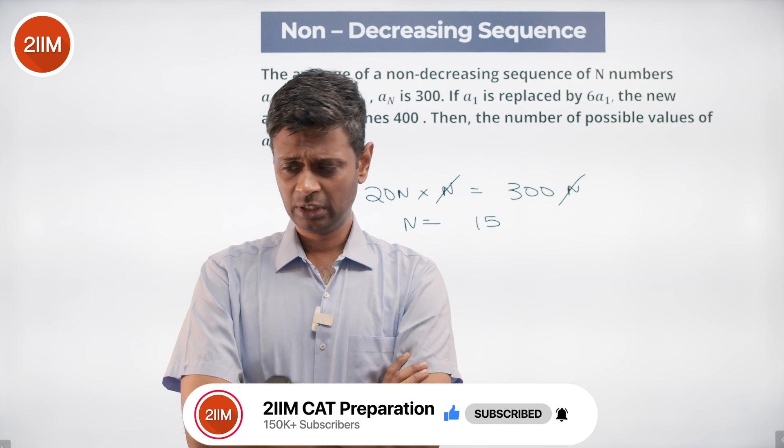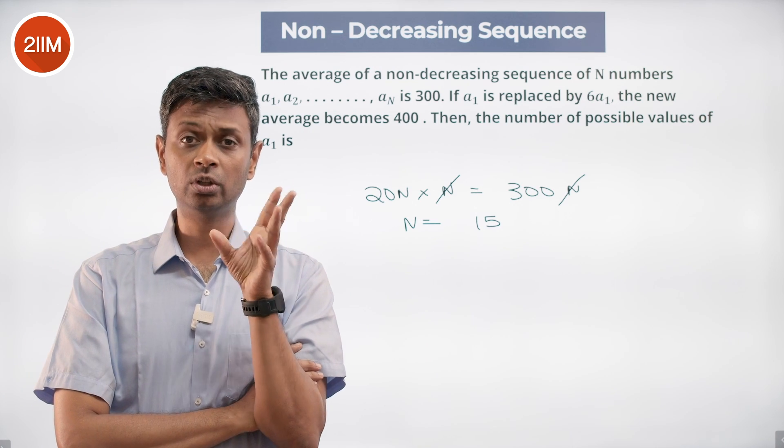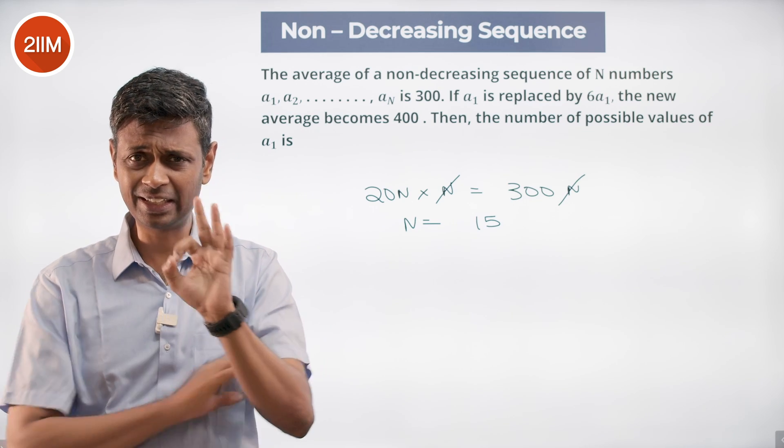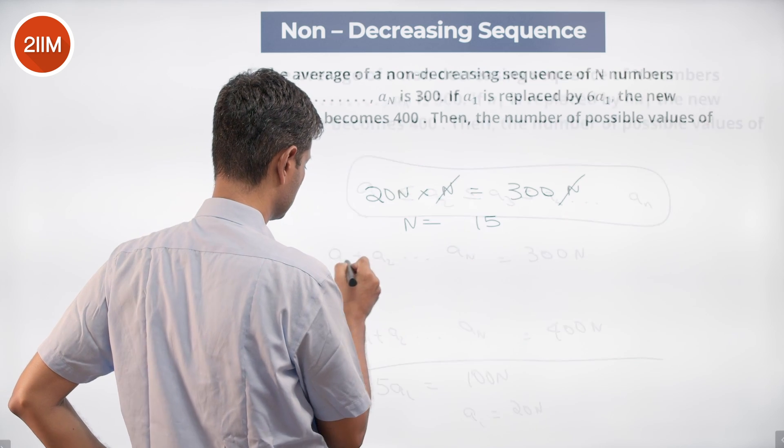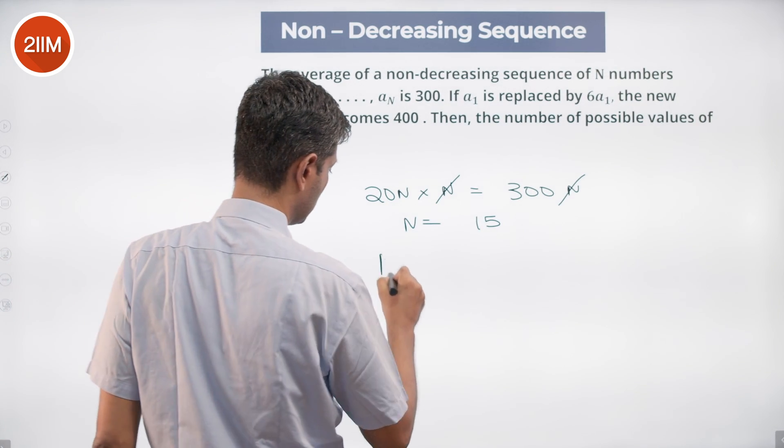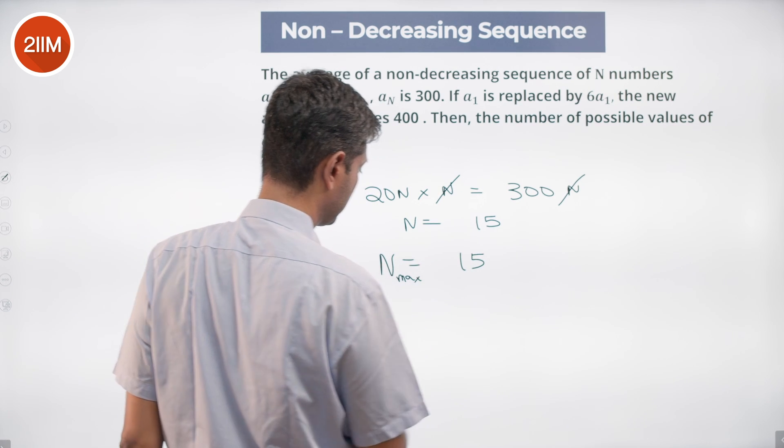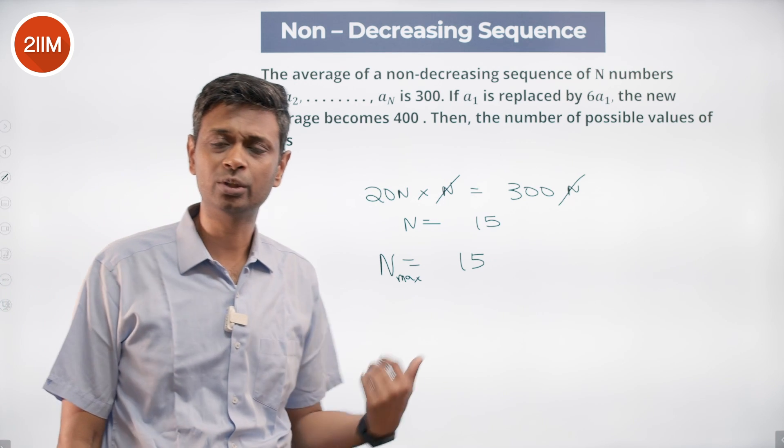That means if N were 16, a₁ being 20N and even all 20, 20, 20... 16 twenties, in the extreme scenario, it would still add up to 320N. That's not possible. The maximum value N can take is 15.